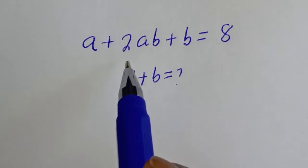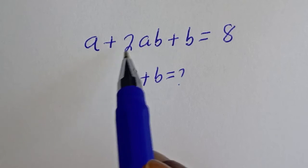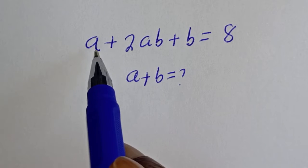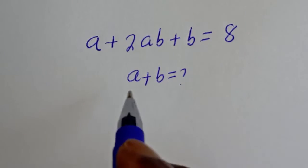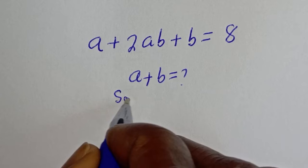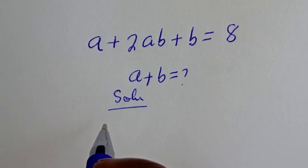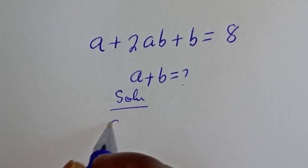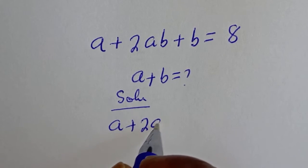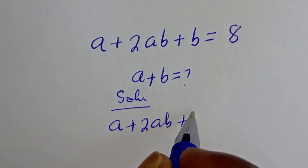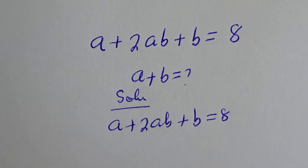Hello. How to solve for a plus b from this given nice math problem. a plus 2ab plus b is equal to 8.